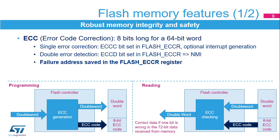When one error is detected and corrected, the ECCC flag indicating ECC correction is set in the flash ECC register named FLASH_ECCR. An interrupt can be generated. When two errors are detected, the ECCD flag indicating ECC detection is set in the flash ECC register. In this case, an NMI is generated.